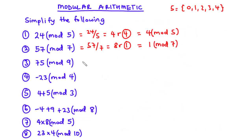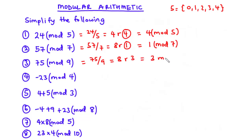Question 3: 75 modulo 9. We divide 75 by 9: 9 times 8 is 72, so we have 8 remainder 3 (since 75 minus 72 is 3). Therefore 75 mod 9 equals 3.